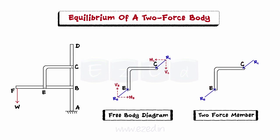Hence, if the frame is in a state of equilibrium, then RC is equal to RE in magnitude but is opposite in direction. Both the forces are collinear — that is, both are directed along the line CE.